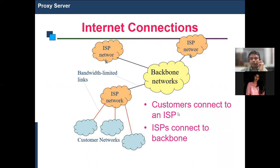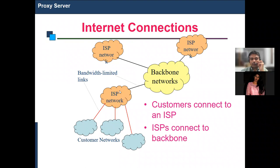The customer connects to the ISP, and the ISP connects to the backbone network, through which transactions reach the corresponding party. From the customer network, traffic goes to the ISP network, then to the backbone network, then to the corresponding ISP network at the destination — this is the process happening in the background whenever you use the internet.